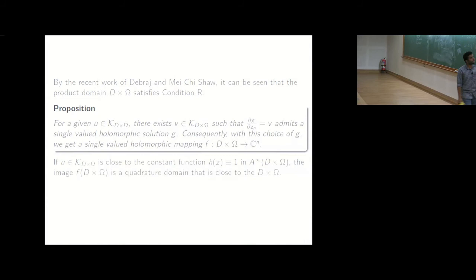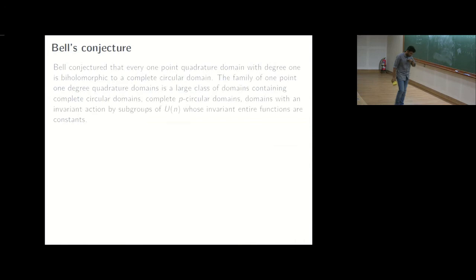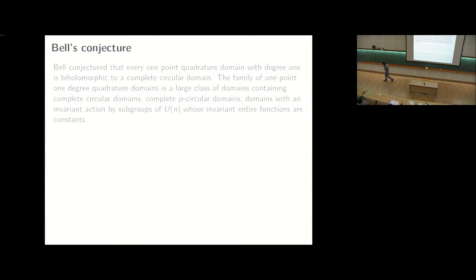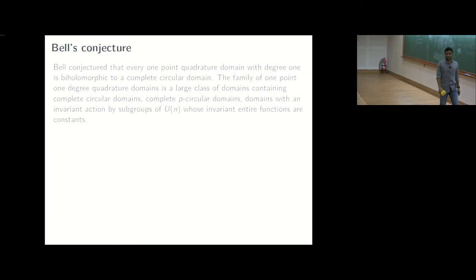So in the last five minutes maybe, I would like to focus on a conjecture by Bell. So if you recall, Epstein Schiffer was a statement which talked about what is the impact of a 1.1 degree quadrature identity in the planar case. It said that it has to be a disk, there is no other choice. So Bell conjectured...